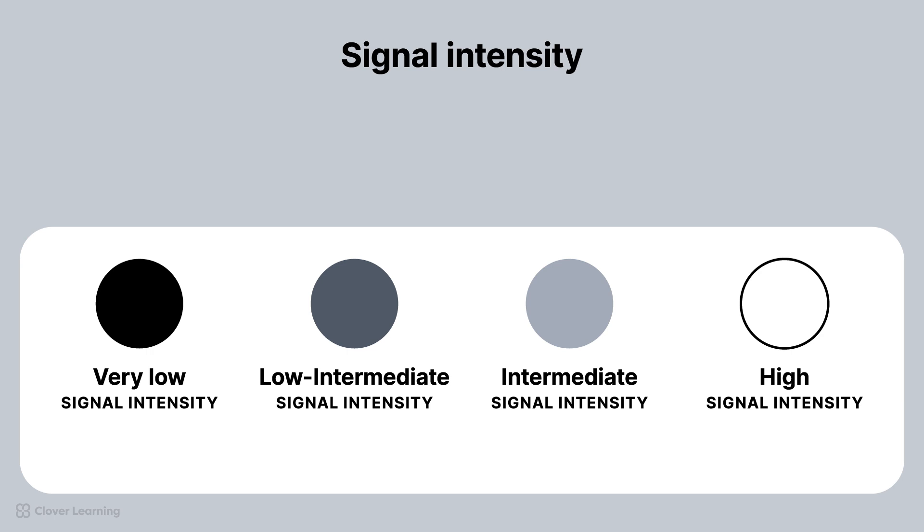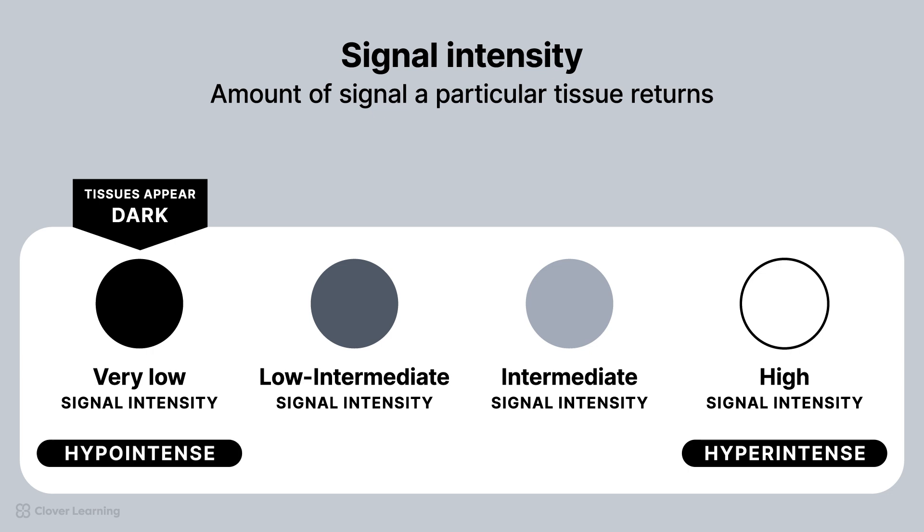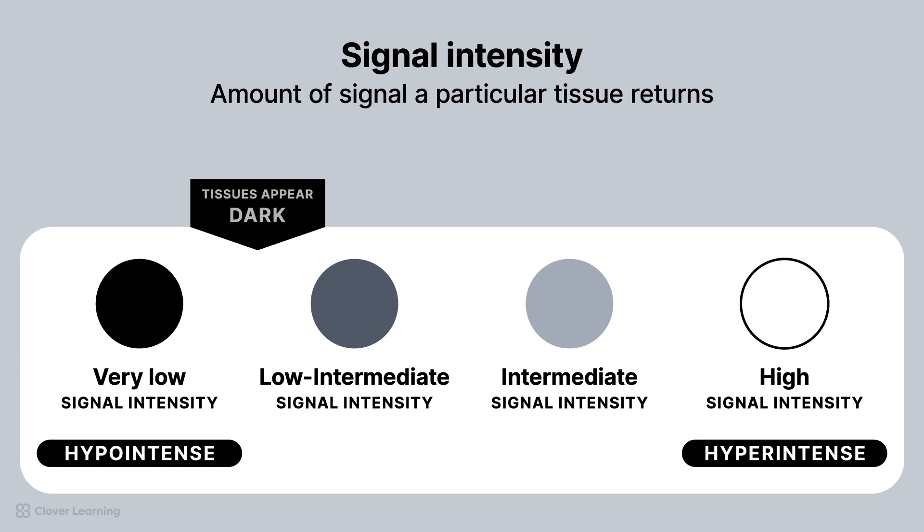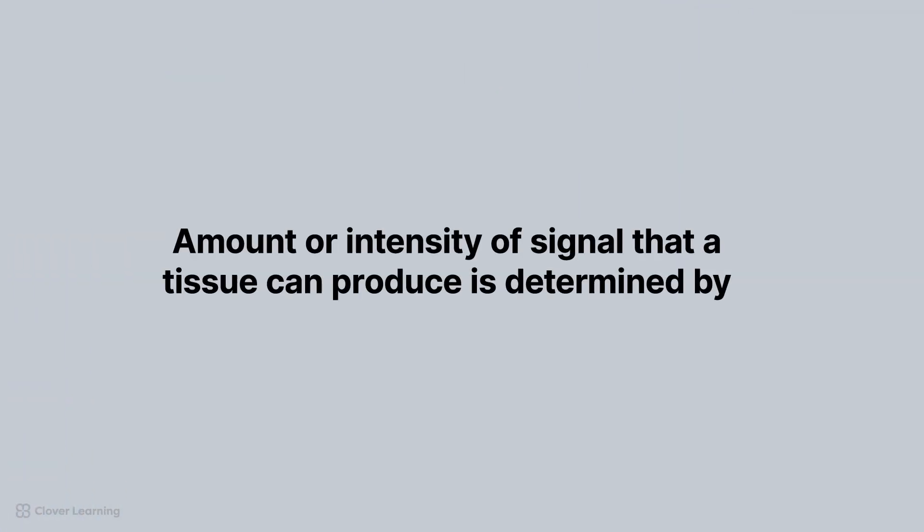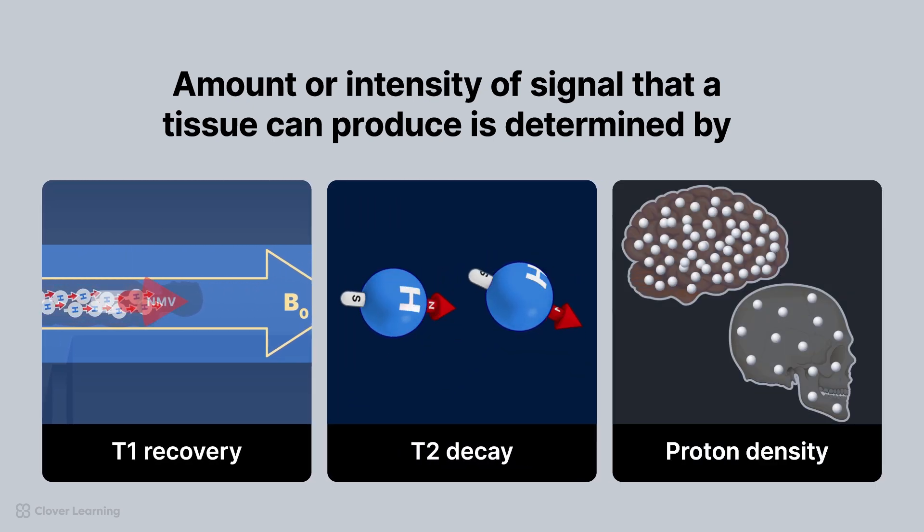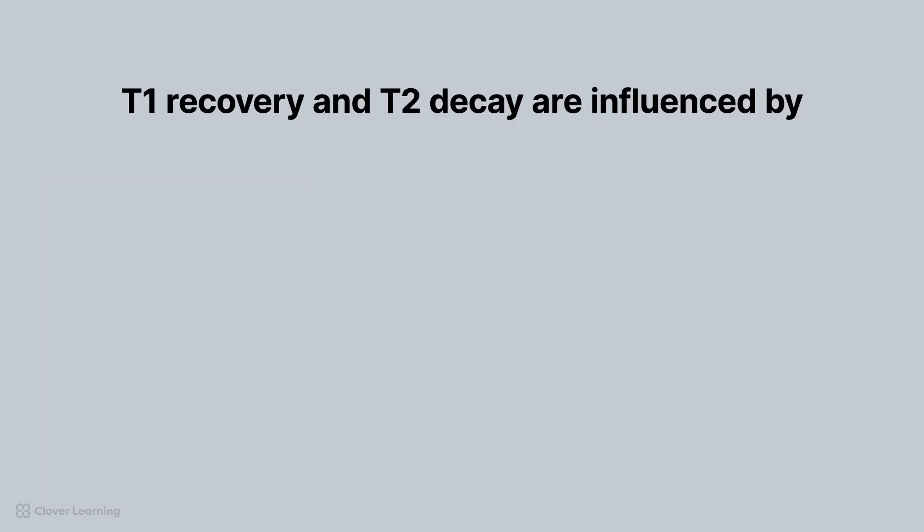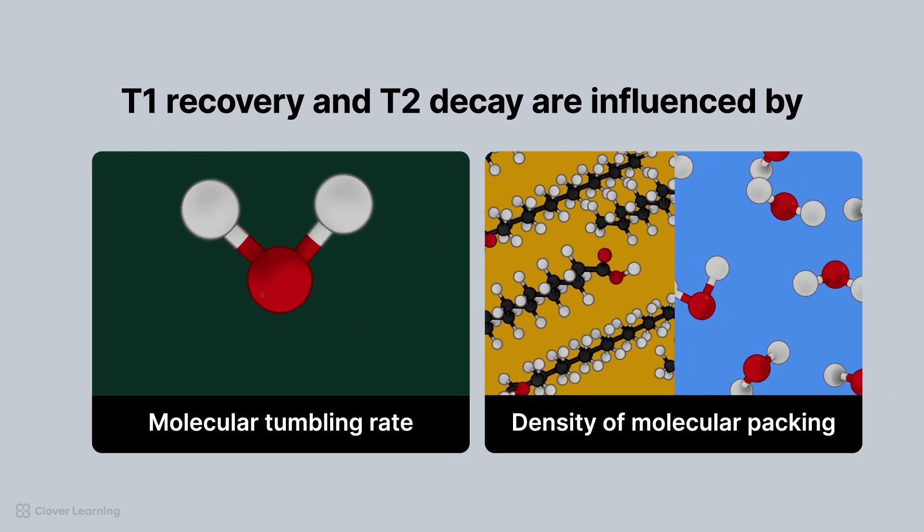In summary, signal intensity represents the amount of signal a particular tissue returns. Tissues can appear bright in hyperintense areas of signal, dark in hypointense areas of signal, and varying shades of gray in intermediate areas of signal. The amount of signal that a tissue can produce is determined by T1 recovery, T2 decay, and proton density. T1 recovery and T2 decay are influenced by molecular tumbling rate and the density of molecular packing.